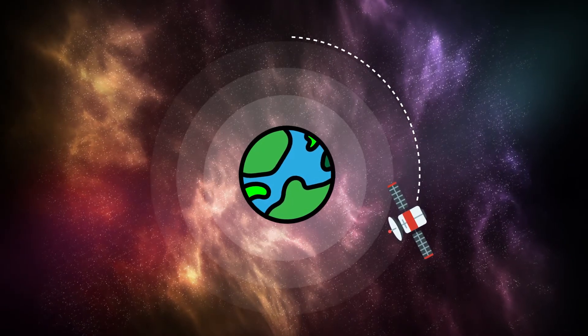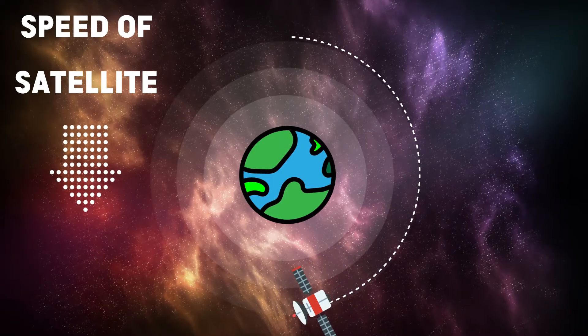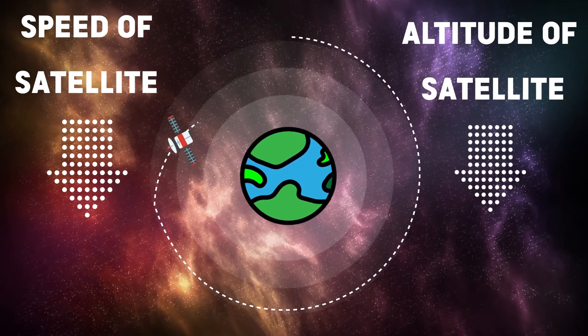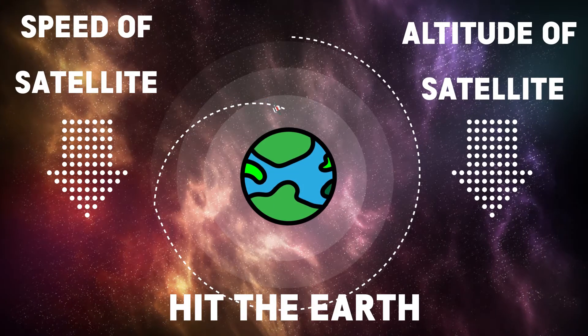To bring back a satellite, the speed of the satellite is to be reduced. As we reduce the speed, the altitude of the satellite will decrease and it will eventually hit the Earth.